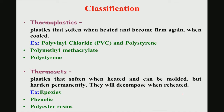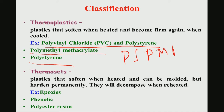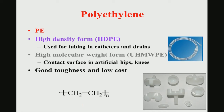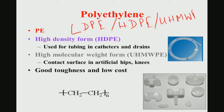Examples of thermoplastics include polyvinyl chloride, polystyrene, and poly methyl methacrylate (PMMA). PMMA is widely used as bone cement clinically. Thermosets soften when heated and can be molded, but harden permanently and decompose when reheated; examples include epoxies, phenolic resins, and polyester resins. Polyethylene comes in several varieties: low density polyethylene (LDPE), high density polyethylene (HDPE), and ultra-high molecular weight polyethylene (UHMWPE).